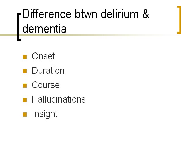Regarding hallucinations: in delirium they can be visual or tactile and very vivid, whereas hallucinations are pretty rare in dementia. Regarding insight: in delirium there are lucid intervals, whereas in dementia it depends on the stage — early-stage patients are aware of some memory loss, but as it progresses toward late stage their insight into their cognitive impairment worsens and they won't realize they can't remember things. In terms of sleep, delirium is associated with disturbed sleep since symptoms are worse in the evenings, whereas dementia is less often associated with sleep disturbances.